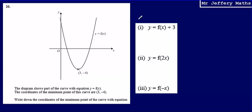This is question 20 in a series of videos taking a look at the Edexcel practice papers. Here we're given a diagram which shows the curve of equation y equals f of x. We're told that the coordinates of the minimum point of this curve are 3, negative 4. We can see that just there.